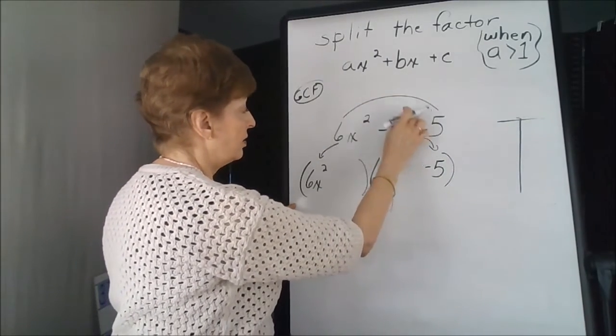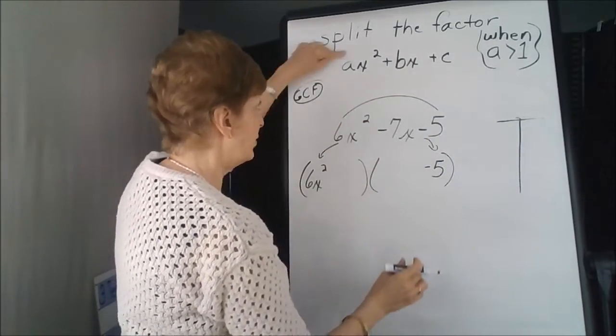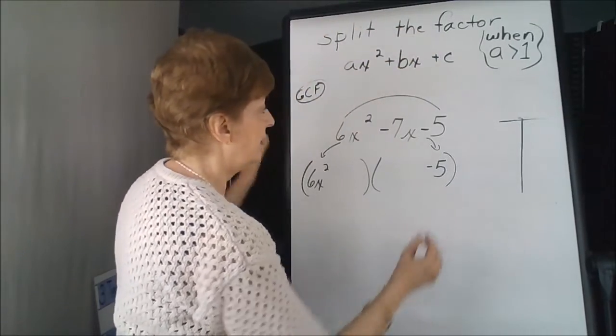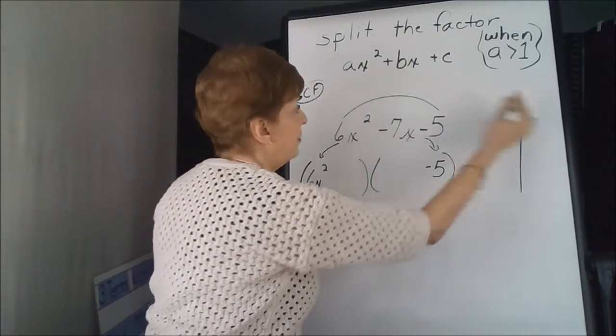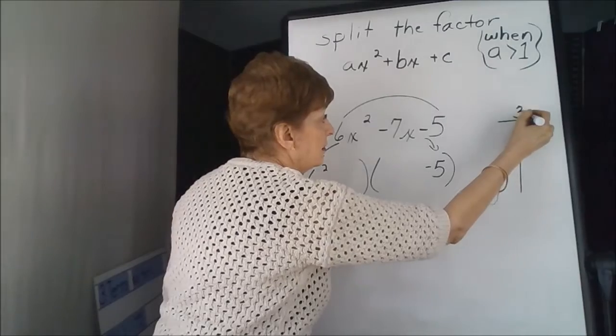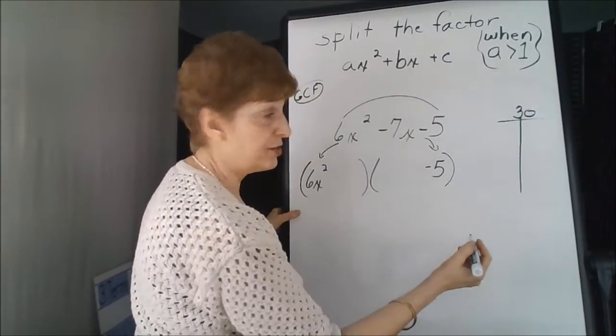Then we're going to multiply the a term and the c term together. So that would be 30, and start our factoring.